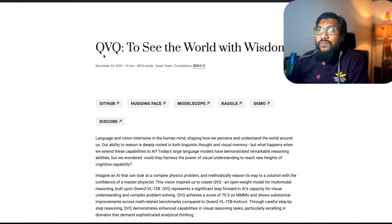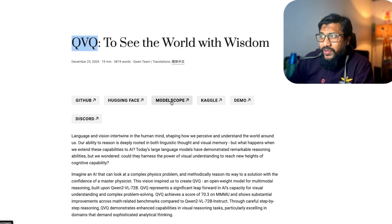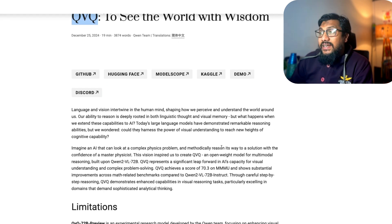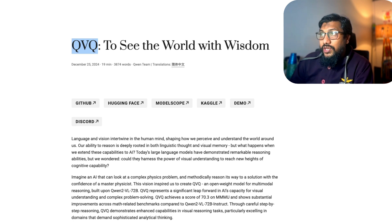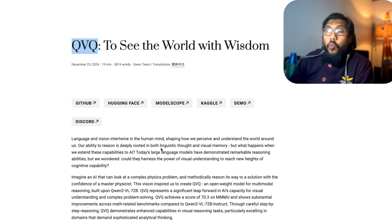In this video I'm going to tell you everything that I know about this model and we're going to put the model through a couple of tests and see how good the model is. First of all, this is called QVQ from Qwen, an Alibaba company. It's available on Hugging Face, Model Scope, Kaggle. The model is available on all these platforms. It is a 72 billion parameter model.